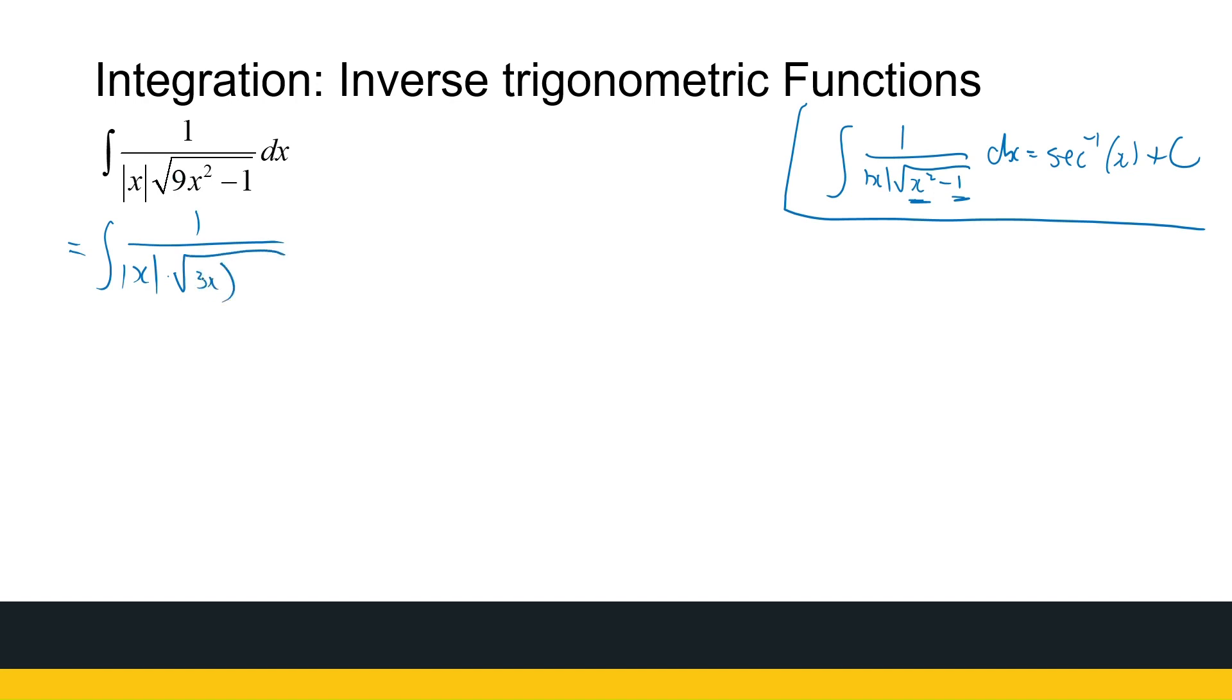That's the absolute value of x times the square root. Now, 9x squared is the same as 3x squared. So rather than 9x squared, I've got 3x squared. I want just the variable squared, so that's where my substitution is going to come out. So let u be equal to 3x, du is then 3 dx.